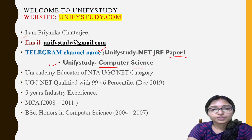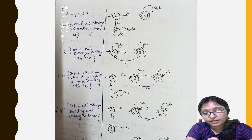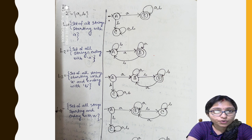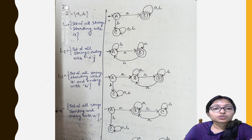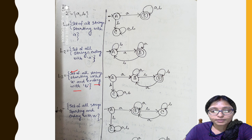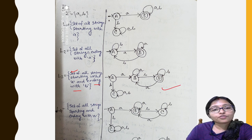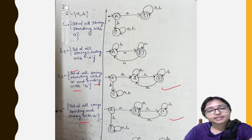Now come to the point. This was the homework for the last class because the TOC free series is going on. The homework was: the set of all strings starting with A and ending with B — this will be the answer — and the set of all strings starting and ending with A — this is the answer.